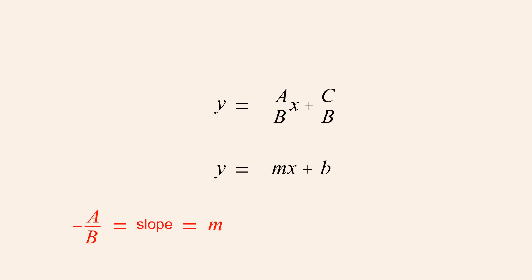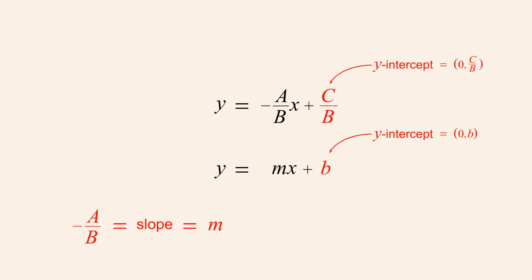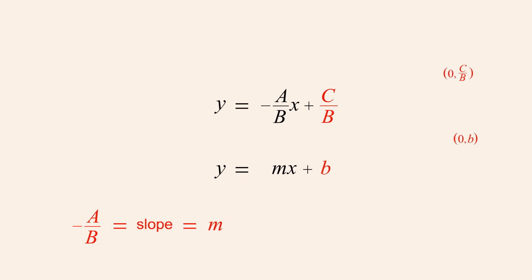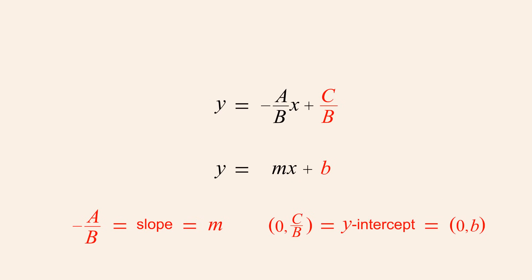We also see that b in the slope-intercept form, which determines the y-intercept, corresponds to the constant expression c over b in the standard form. So c over b is the value of the y-coordinate of the y-intercept.